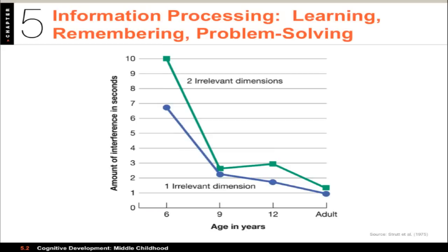We're again looking at cognitive development, and the key elements in children's information processing include a few different things. One is the development of selective attention, where you can focus on what's important and screen out distractions. For instance, there's a recall task and a performance task shown here. When kids are really young — about age six — they get really distracted by irrelevant information. That distraction drops a lot by the time they're nine, is around the same at twelve, and is lower still by adulthood, as they're able to screen out the stuff that shouldn't be there.